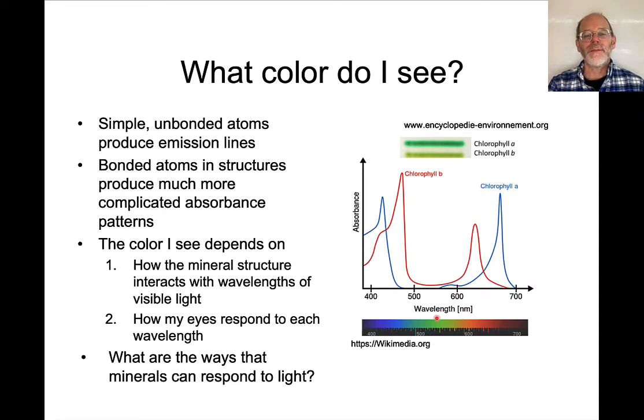Now, complex compounds and minerals do not have simple absorption and emission spectra. Here, for example, are the absorption spectra for chlorophyll A and chlorophyll B. These are two types of chlorophyll that occur in plants.